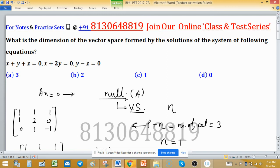So only one free variable, meaning the dimension of this null space is 1. So option C is correct.